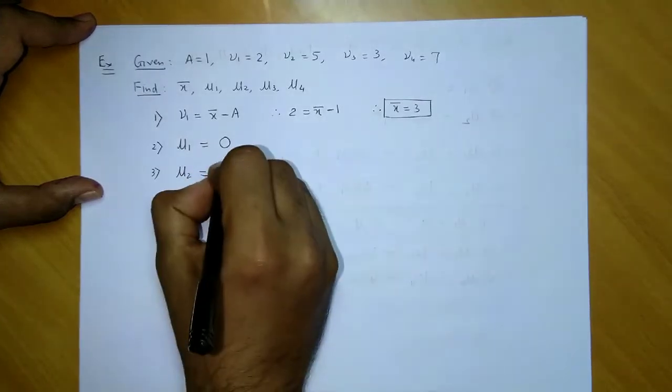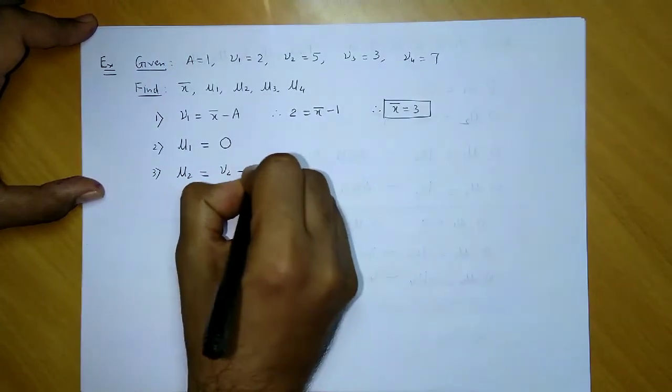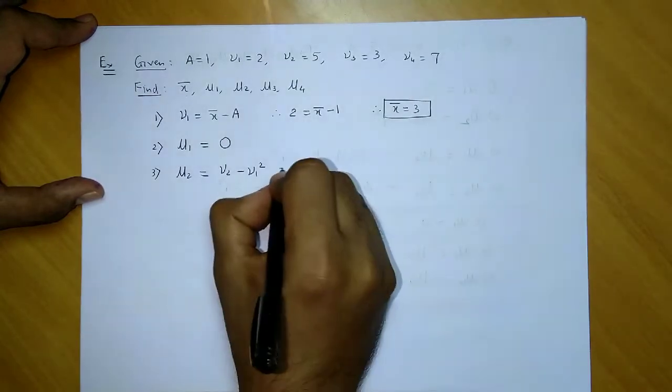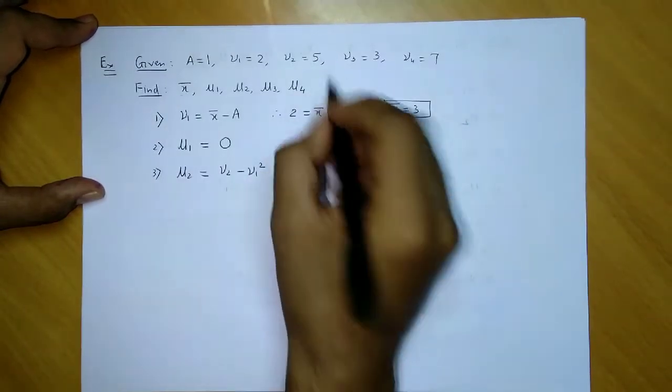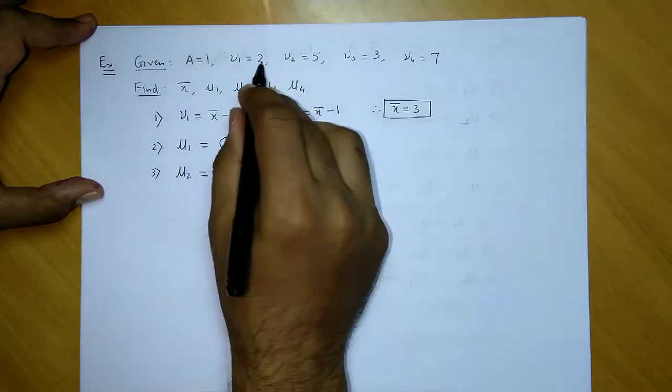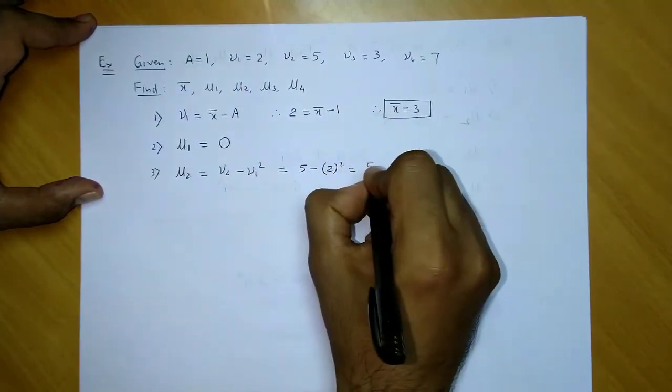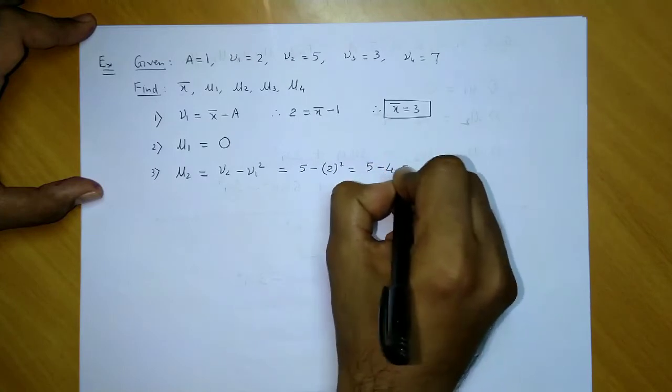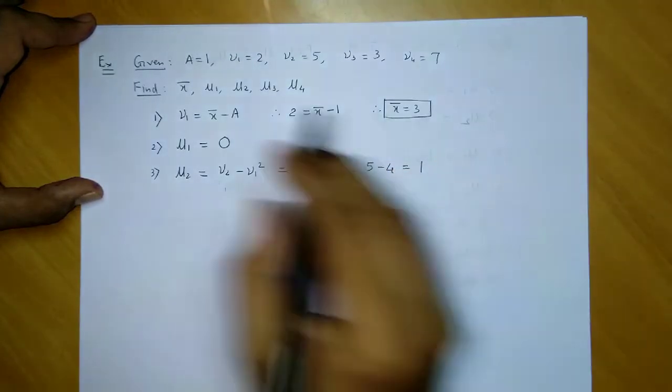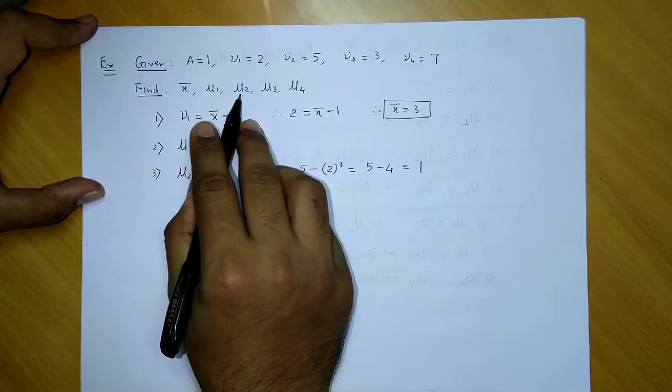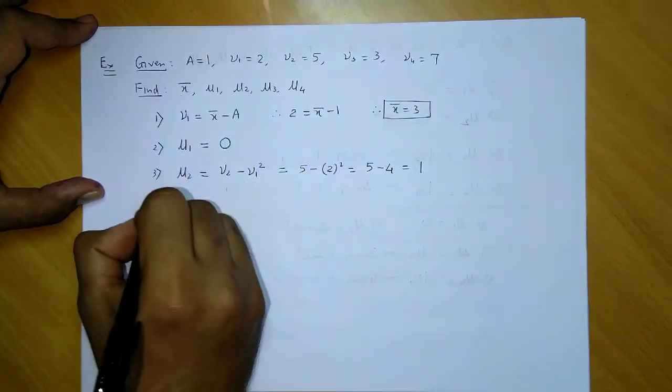Now we go to μ2. μ2 is nothing but v2 - v1². Let us substitute: v2 which is 5 minus v1 that is 2, the whole square. So 5 - 4 = 1. This is the second central moment.